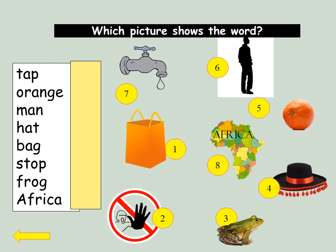Which picture shows the word? Tap. Number seven. Orange. Number five. Man. Number six. Hat. Number four. Bag. Number one. Stop. Number two. Frog. Number three. Africa. Number eight.